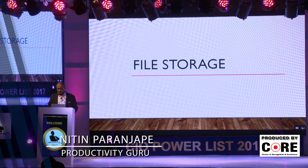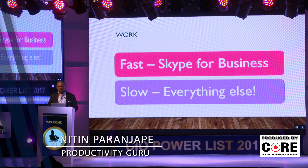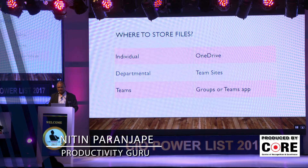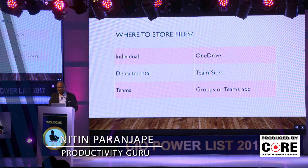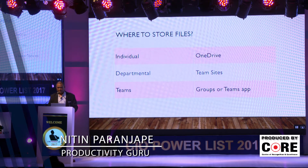All the things we do is some kind of work. There are two types: fast work and slow work. Fast work is done using some kind of instant messaging — in this case, Skype for Business. Slow means everything else, which typically boils down to mail with attachments. Even if it is OneDrive or SharePoint, there is no instant response coming to you — that's why I'm calling it slow. Individual files go on OneDrive, departmental files on SharePoint-based team sites, and teams may use Groups or the new Microsoft Teams app.